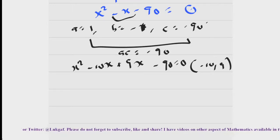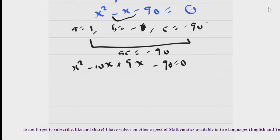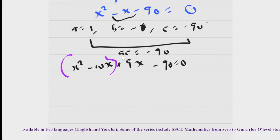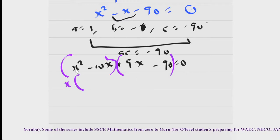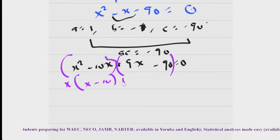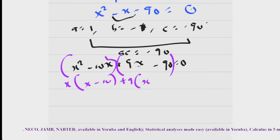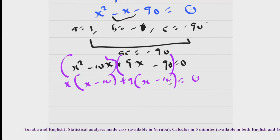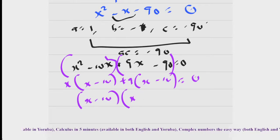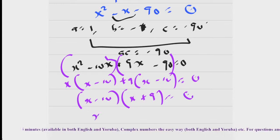Continuing from there, group the terms: (x² minus 10x) plus (9x minus 90) equals zero. Factor out the common factor from each group. From the first group, x is common, giving x(x minus 10). From the second group, 9 is common, giving 9(x minus 10). So you have (x minus 10)(x plus 9) equals zero.